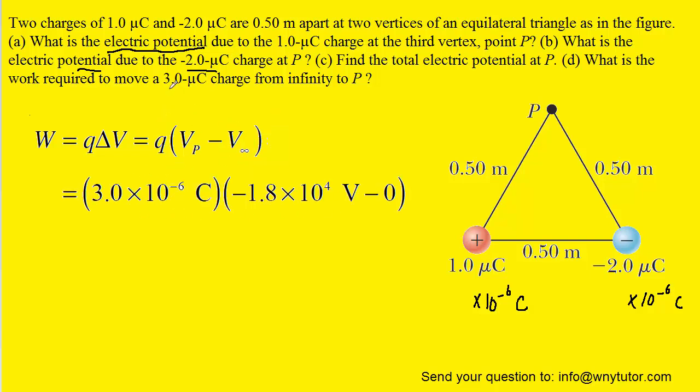We've gone ahead and plugged in the known values. Notice again that we converted the given charge into coulombs by multiplying by 10 to the minus 6th. And then we've plugged in the potential that we found at point P earlier. And so when we compute this,